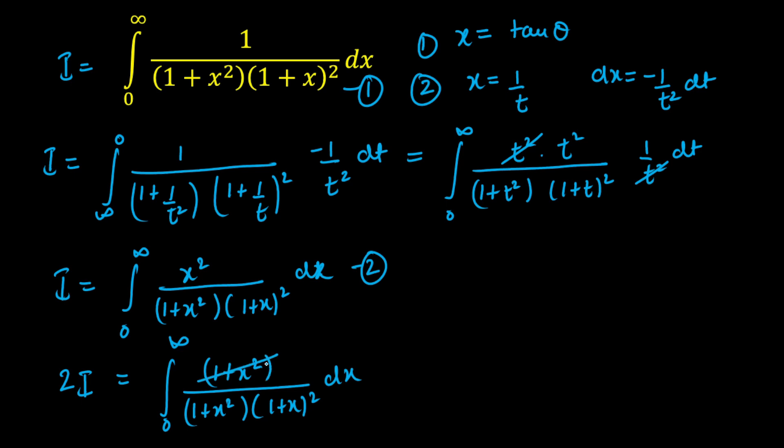Now here 1 plus x square 1 plus x square will cancel out and as you can see what is remaining 1 upon 1 plus x whole square. Its integration is minus 1 upon 1 plus x and then lower limit is 0 upper limit is infinity.